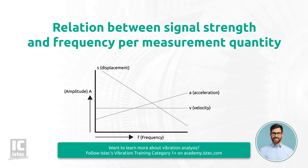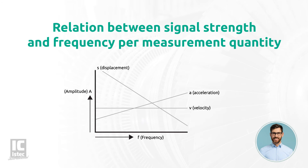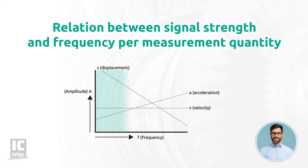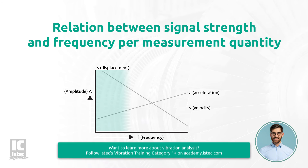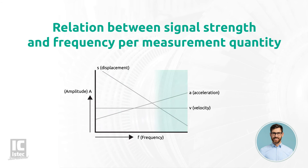Again, S, V, and A represent the measurement quantities displacement, velocity, and acceleration. F is the frequency. The vertical axis represents the amplitude A. We can see that for measurements on low speed applications, it is best to use the measurement unit displacement. The amplitude A of the displacement signal is highest at low frequencies. For measurements on high speed applications, it is best to use the measurement unit acceleration. The amplitude A of the acceleration signal is highest at high frequencies.